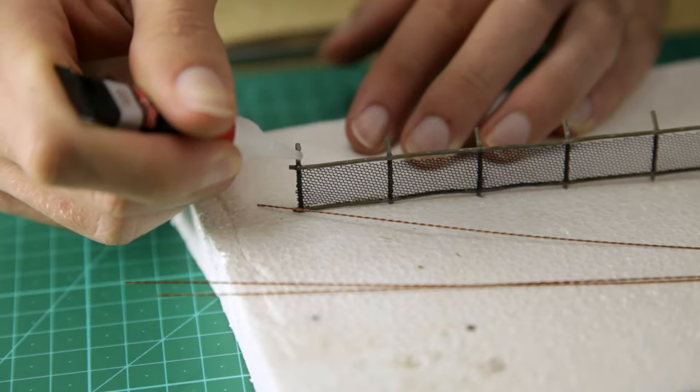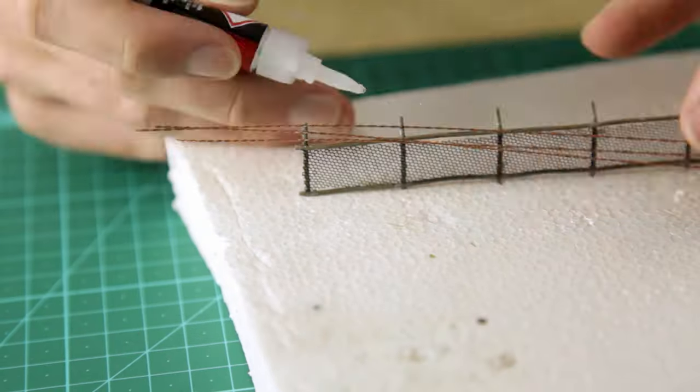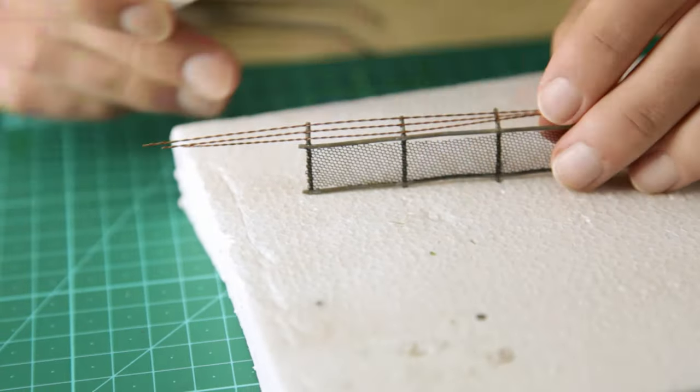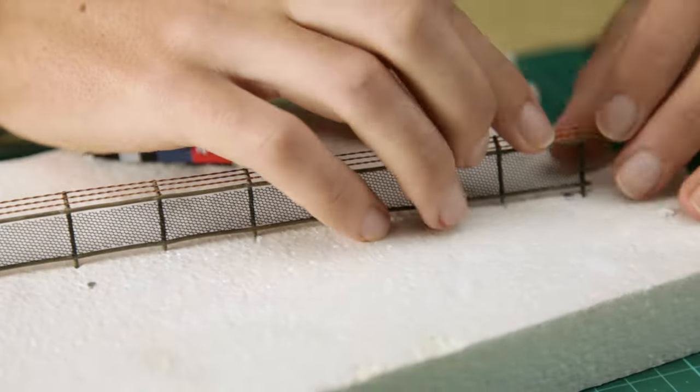To glue on the barbed wire I install the fence in some foam. Just to hold it up straight and make it easier to glue on the barbed wire. Gluing it on is quite fiddly but just take your time and before you know it you'll be done.